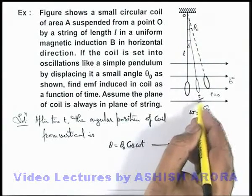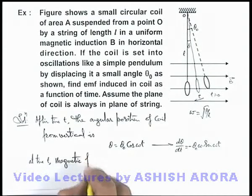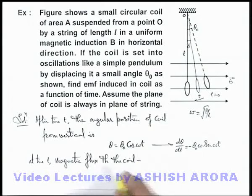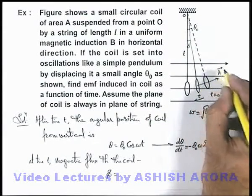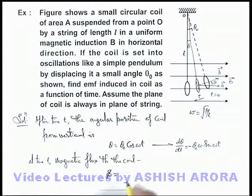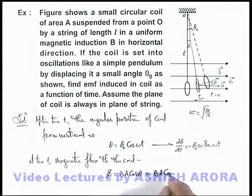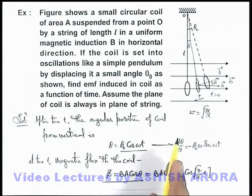At time t, the magnetic flux through the coil can be written as B·A (dot product). The magnetic induction is toward the right, and the area vector is perpendicular to the surface. If the angle between the area vector and the magnetic field vector is θ, the flux is B·A·cos(θ). Substituting θ = θ₀·cos(√(g/l)·t), we get Φ = B·A·cos(θ₀·cos(√(g/l)·t)) as the magnetic flux as a function of time. To find the induced EMF we will use Faraday's law.